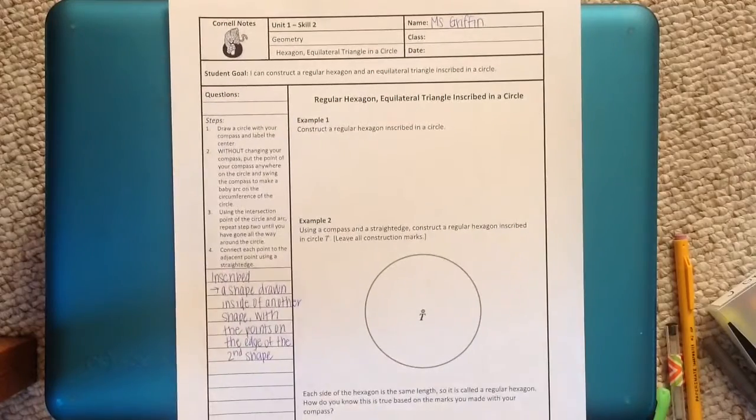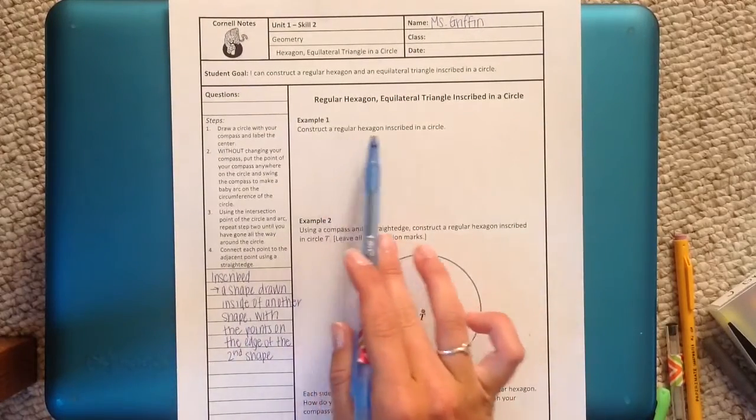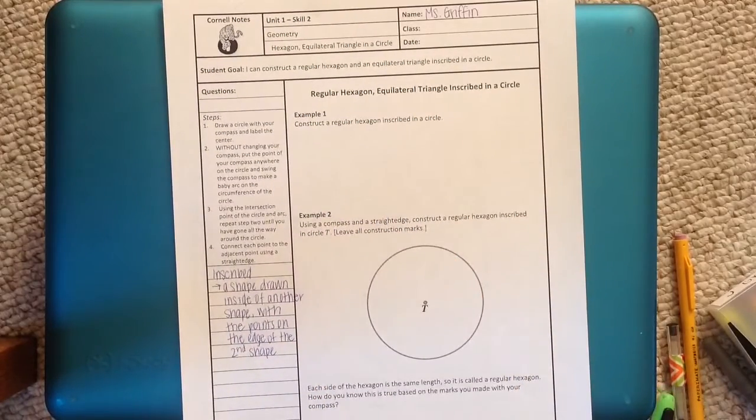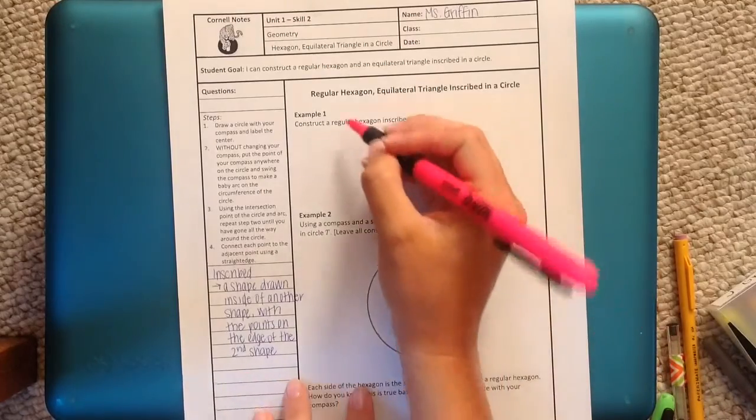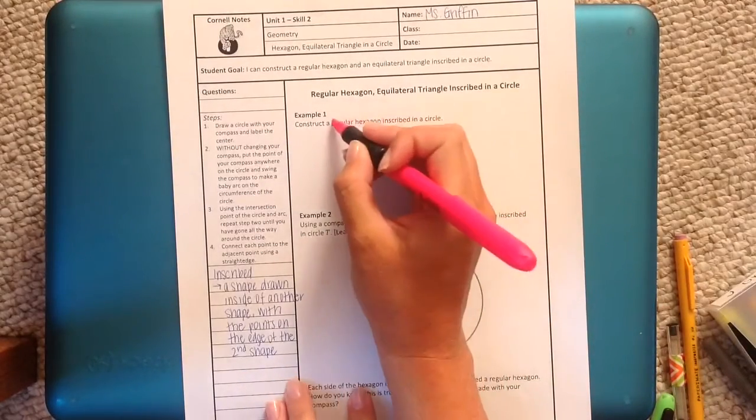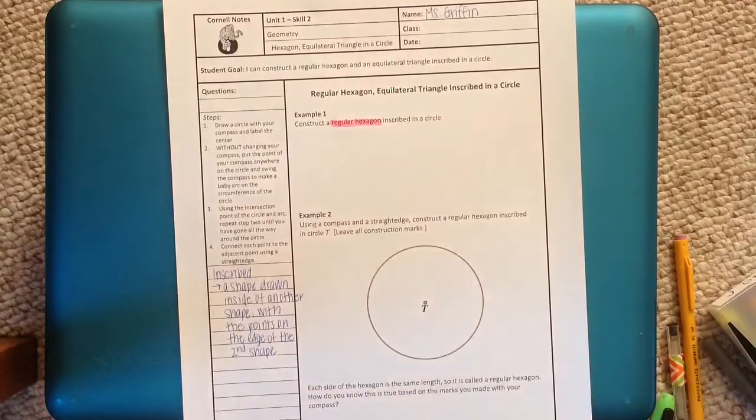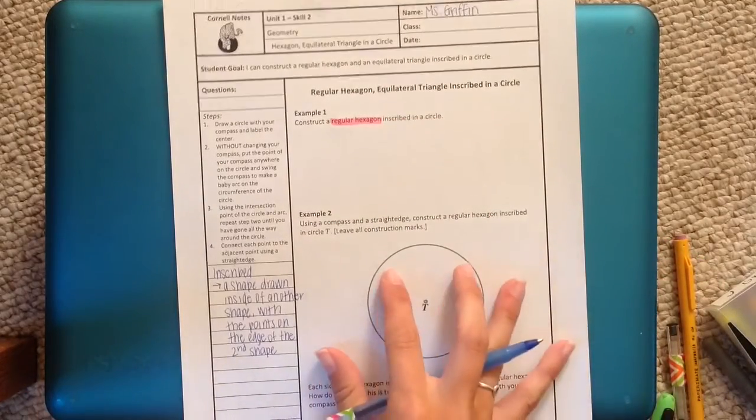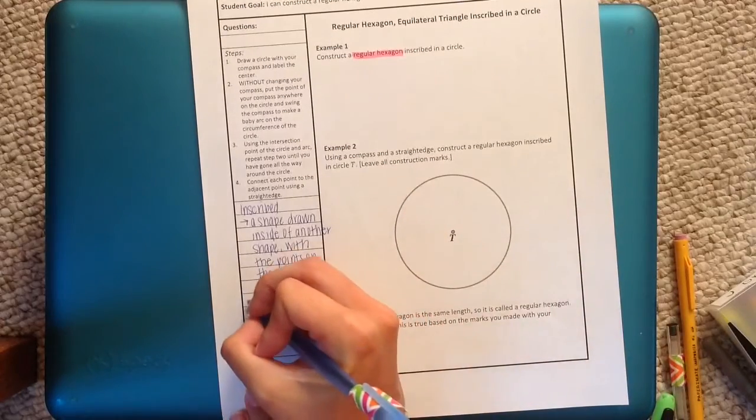So in example one, you'll notice that it says to construct a regular hexagon. So we'll break that apart kind of like what we did in the first video that you saw, Skill 1 yesterday or earlier today depending on when you watched it. Regular means that a shape has all congruent sides and all congruent angles. So we'll define that over here.